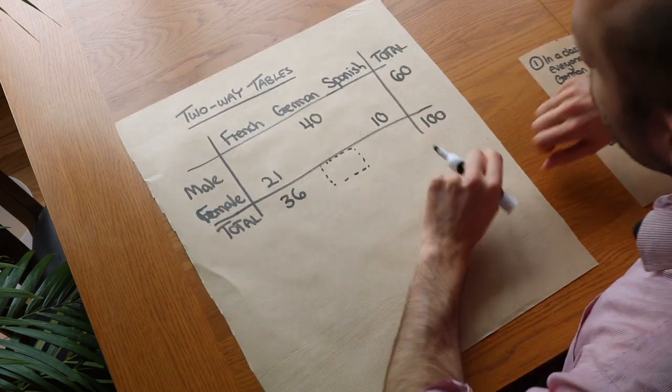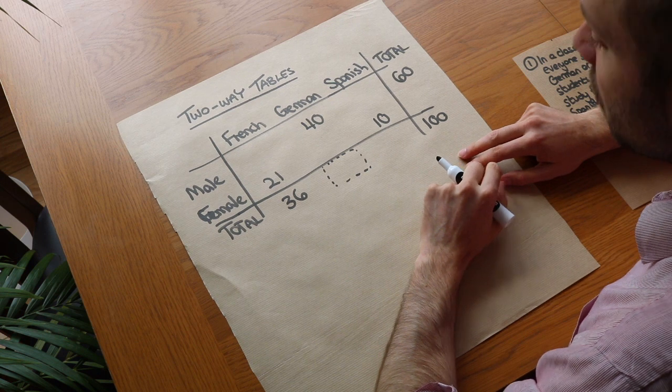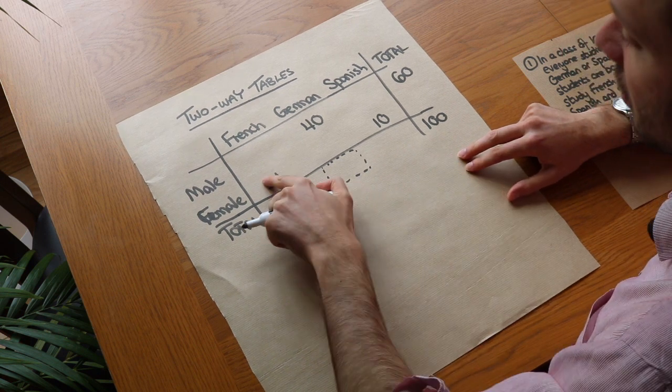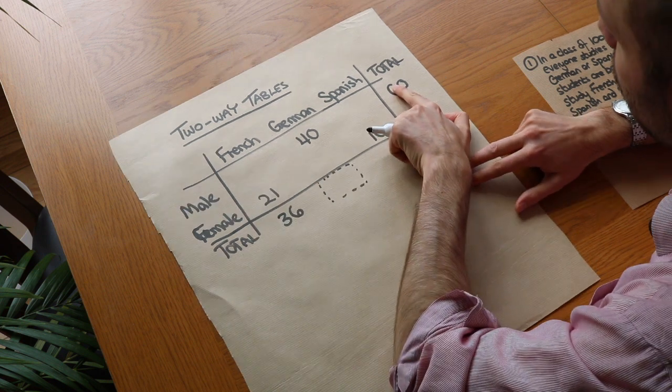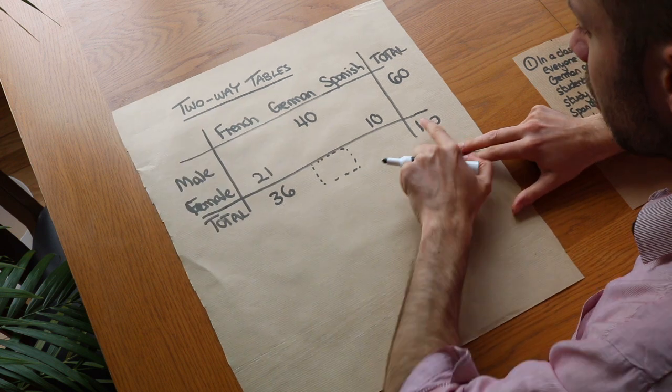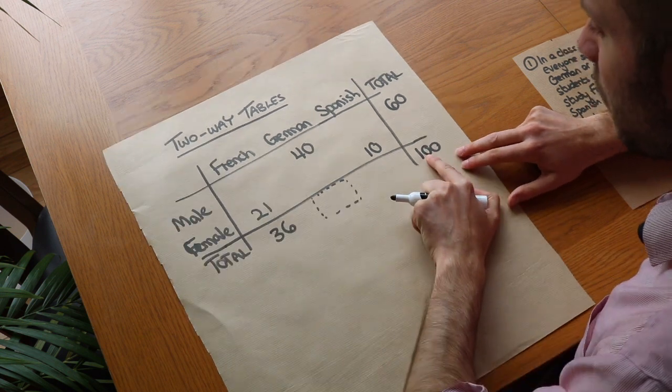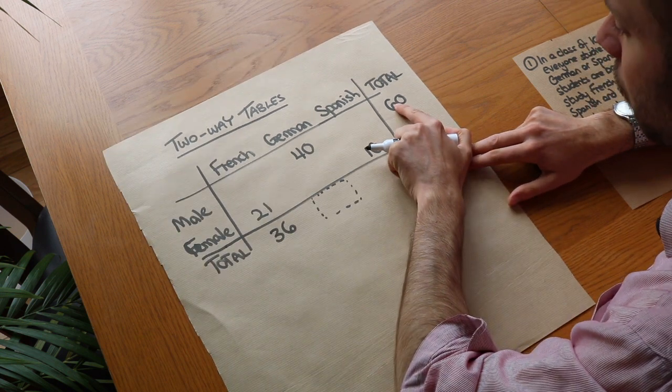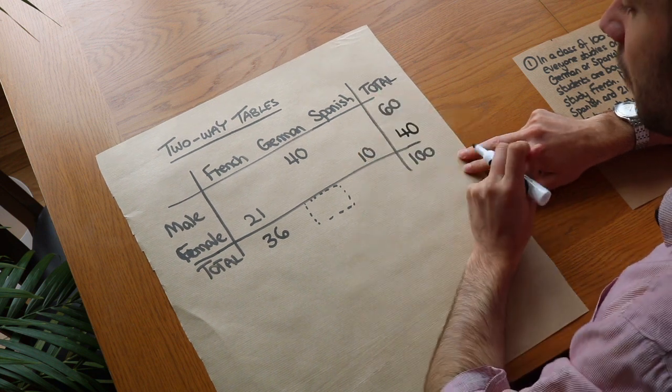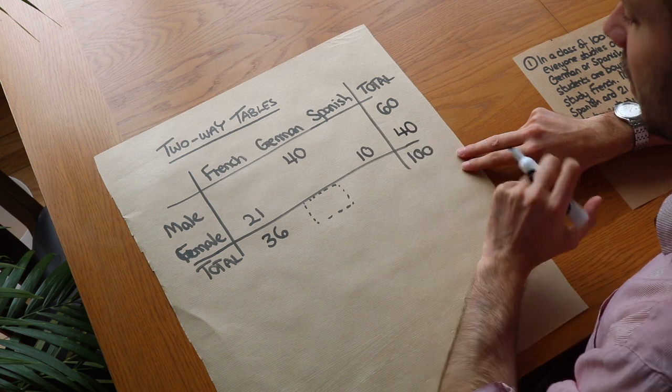Now at this point we can just use our table and we can just use the fact that we know that the total of each column is just the sum of these numbers and the total of each row is just the sum of these numbers so we know there's a hundred students and we know 60 of those students are male so we therefore know that 40 of them must be female we just do 100 minus 60 to get 40.